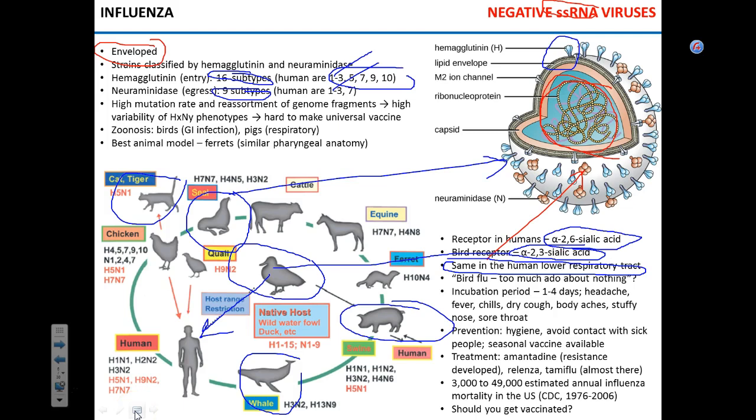People can acquire bird flu in these particular settings, but it cannot be transmitted from person to person. If someone has bird flu deep in the trachea or bronchi and coughs, the aerosolized virus would end up in the upper respiratory tract of the next person during a normal tidal breath — and there is no appropriate receptor there. There is no recorded case of human-to-human transmission of bird flu.